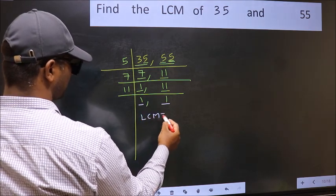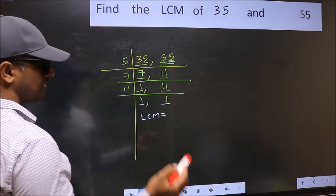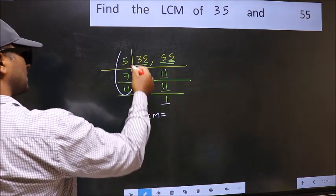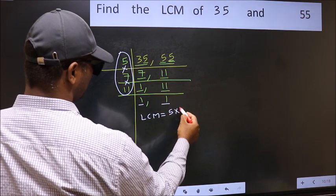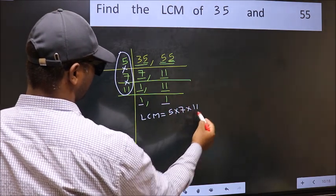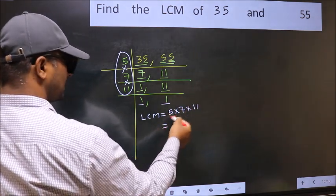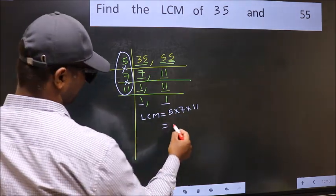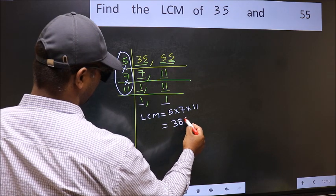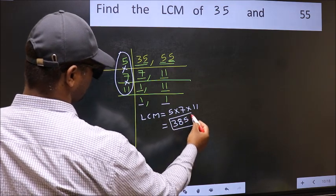So our LCM is the product of these numbers. That is 5 into 7 into 11. When we multiply these numbers, we get 385 is our LCM.